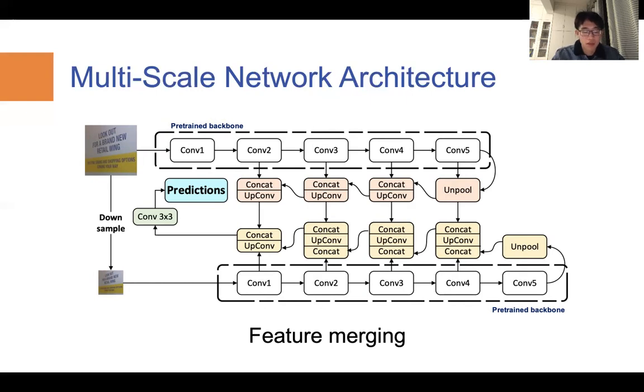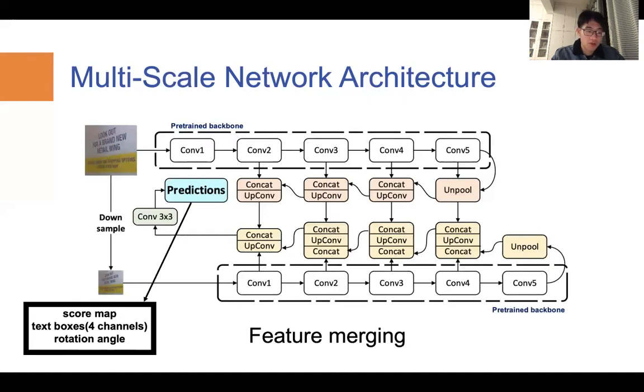After passing through a convolutional layer with a filter size of 3 by 3, the output features are used to produce our predictions. By the way, the predictions consist of three parts: the score map of one channel, text boxes of four channels, and rotation angle of one channel.